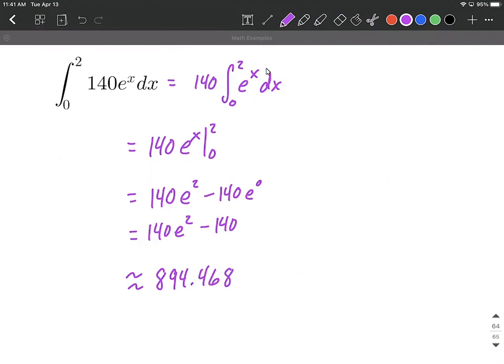All right, I hope this helps out. Whenever you have e to the power of x, you're simply going to integrate by getting e to the power of x again. And then make sure you plug in the top value first, subtract away, plug in the bottom value next, and simplify down if possible. All right, hope this helps. Good luck.